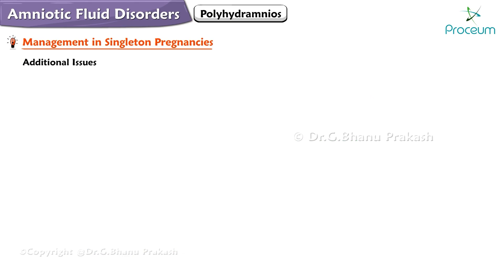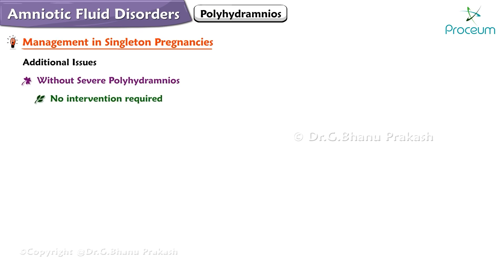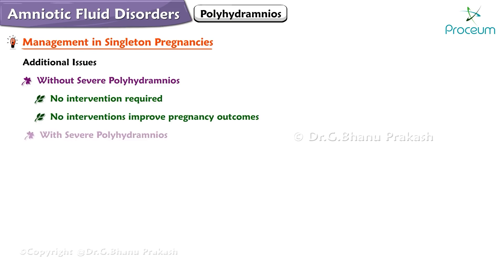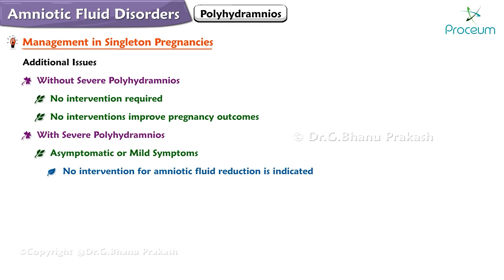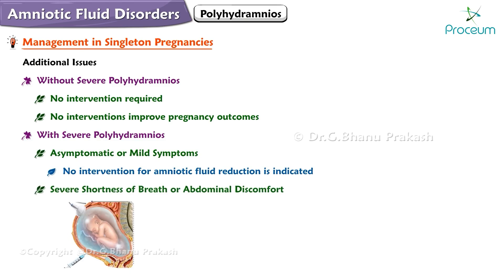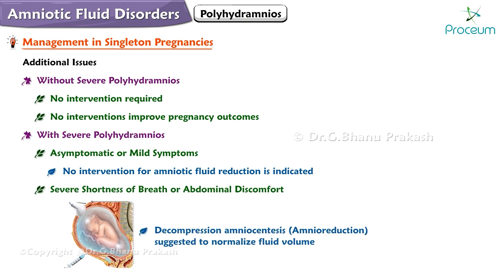Now for additional issues. In patients without severe polyhydramnios, typically no intervention is required, as severe symptoms are unlikely and no interventions improve pregnancy outcomes. In patients with severe polyhydramnios who are asymptomatic or have mild symptoms, no intervention for amniotic fluid reduction is indicated. But for severe shortness of breath or abdominal discomfort, decompression amniocentesis or amniotic reduction is suggested to normalize fluid volume.